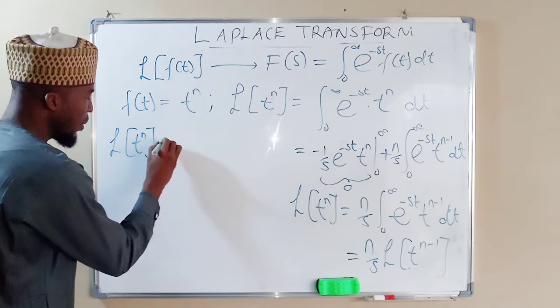Now for the fifth and final formula, which I will state without full derivation: the Laplace transform of cos(λt) equals s over (s² + λ²), for s greater than λ. You can use the same principle of integration by parts to derive this. We have now derived all five fundamental Laplace transform equations to be used in subsequent examples. In the next class we will look at how to find the Laplace transform of various functions. Thank you for watching — please share with your colleagues and subscribe for more videos.